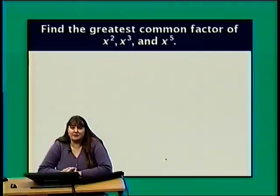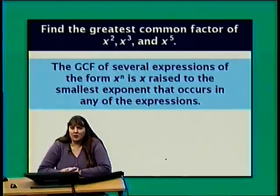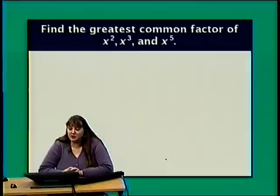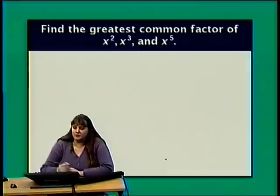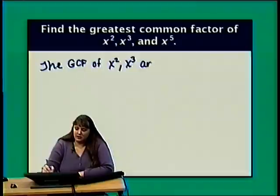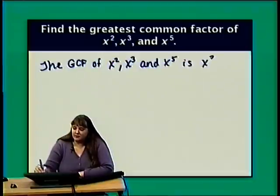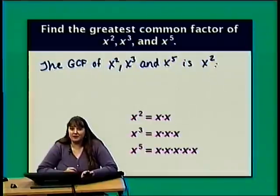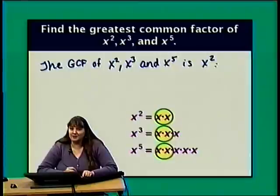What if we have variables? Let's find the greatest common factor of x squared, x cubed, and x to the 5th. The GCF of several expressions of the form x to the n is x raised to the smallest exponent that occurs in any of the expressions. The smallest exponent here is 2, so the GCF is x squared. This makes sense: x squared is x times x, x cubed is x times x times x, and x to the 5th has 5 factors of x — every one of them has at least two factors of x.